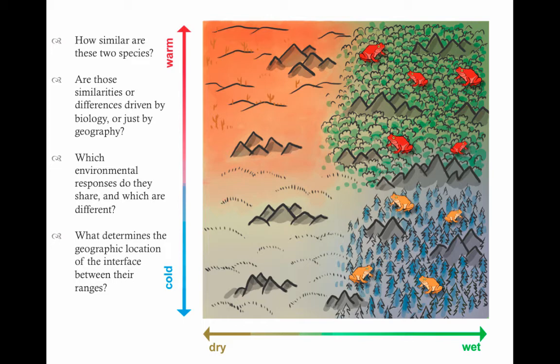We can ask things about which environmental responses a pair of species share and which are different. In places like this, we've got this barrier between these species or this boundary between two species ranges. We could ask whether there are environmental correlates that determine the geographic location of that boundary. And all of these are things that we can actually test in ENM tools, and we'll look at those later. Most of them are.